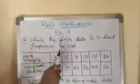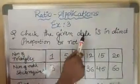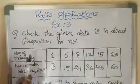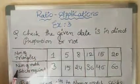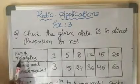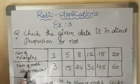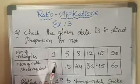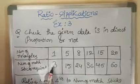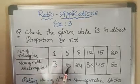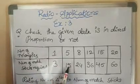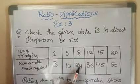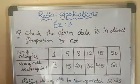If you see on the board, check the given data is in direct proportion or not. The given data is number of triangles and number of matchsticks required. If I want to prepare one triangle, I require 3 matchsticks. For 5 triangles, 15 matchsticks are required. For 8 triangles, 24 matchsticks are required, and so on.